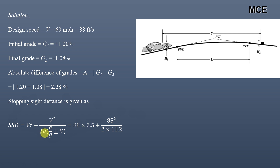So SSD equals 88 × 2.5 plus 88² divided by (2 × 11.2), which equals 565.71 feet. This is our stopping sight distance value.